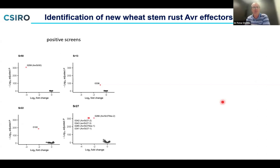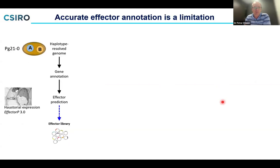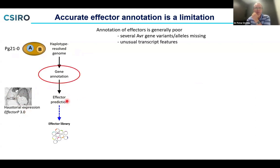However, we also screened four other resistance genes and didn't detect anything. We think the reason is that we simply hadn't included those avirulence genes in the library. It turns out the real limitation is in the gene annotation step. We have a good haplotype-resolved genome and are good at predicting which genes are likely to be effectors from expression analysis, but gene annotation is a real limiting factor — as it is in many different fungal pathogens, because annotation tools haven't been optimised for them. Several known avirulence gene variants and alleles just don't get annotated.